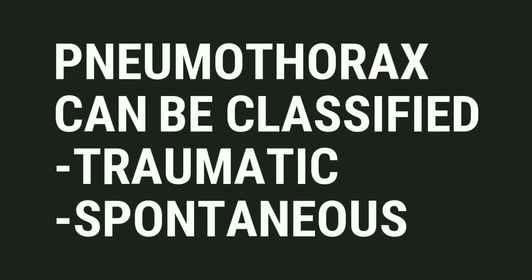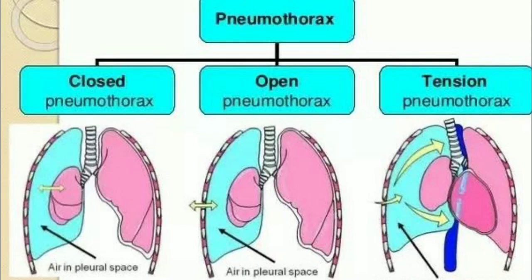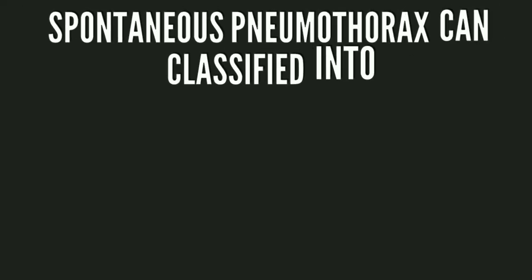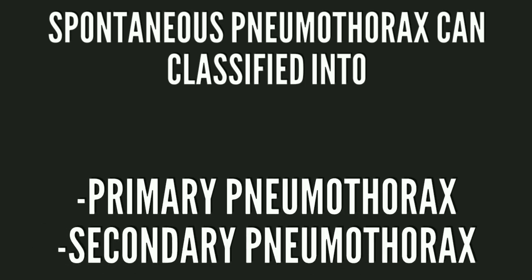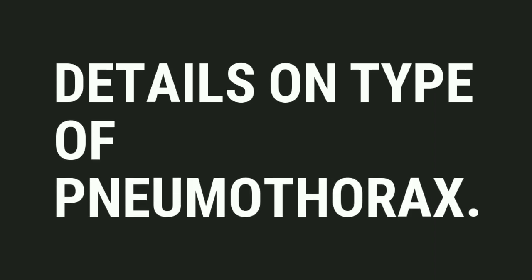Pneumothorax can be classified as either traumatic or spontaneous. Traumatic pneumothorax can be further classified into open pneumothorax and closed pneumothorax. Spontaneous pneumothorax can be further classified into primary pneumothorax and secondary pneumothorax. Now let's go into the details about each type.